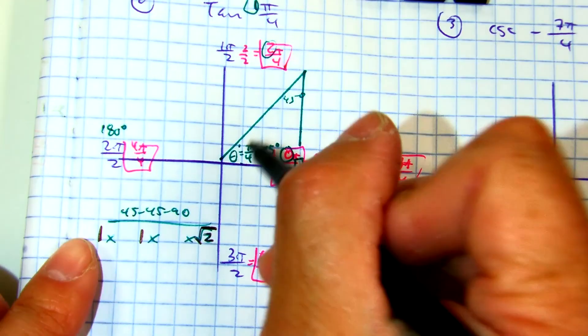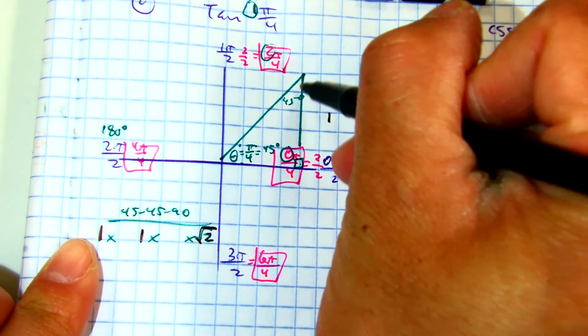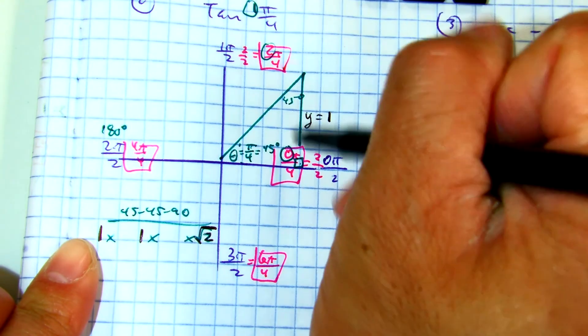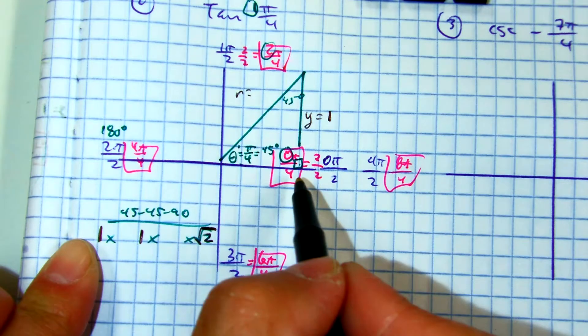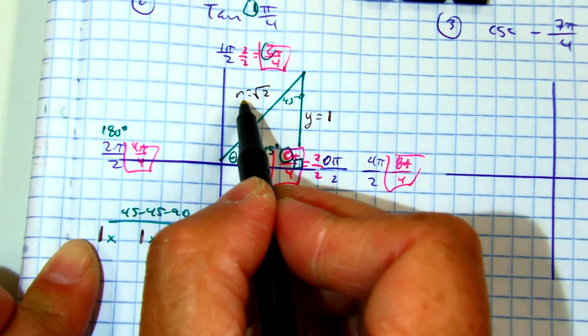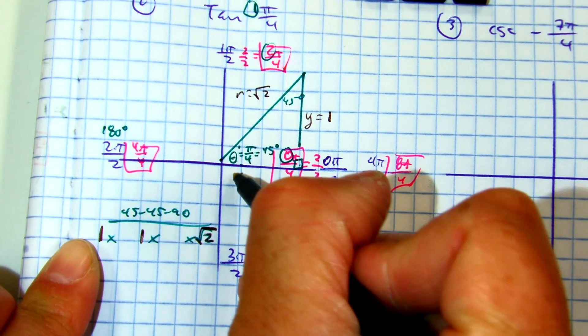So across the 45, there's a 1. This is going up and down. This is a Y axis. It's positive because it's going up. R value radius is going to be a radical 2. Radius is always what, class? Positive. X value, 1.